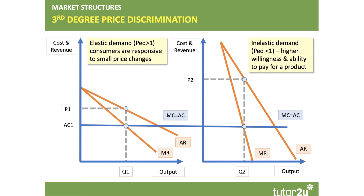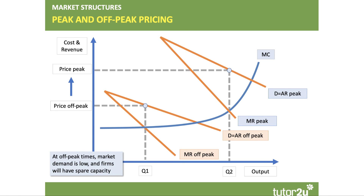Here's a diagram showing price discrimination. On the left-hand side are fairly price-sensitive consumers — assuming the same cost for each market. You tend to charge a lower price, p1, in the left-hand market where consumers are price sensitive. On the right-hand side, demand is more price inelastic, so you can charge a higher price and make a higher profit. This is third-degree discrimination based on price elasticity of demand.